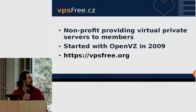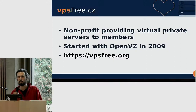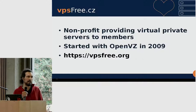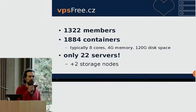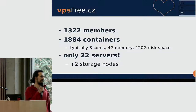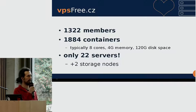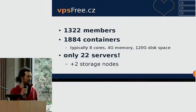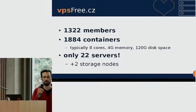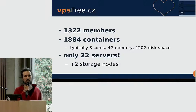This talk is related to our non-profit organization called VPS Free. We are based in Czech Republic. We offer virtual private servers for our members. We started with OpenVZ in 2009, and you can find the site at VPSFree.org. Currently, we have 1,300 members and are running nearly 1,900 containers, typically with eight cores, 4 gigs of memory, and 120 gigs of disk space. This is hosted on much larger machines with almost half a terabyte of RAM, and we host all these containers on only 22 servers plus two storage nodes.